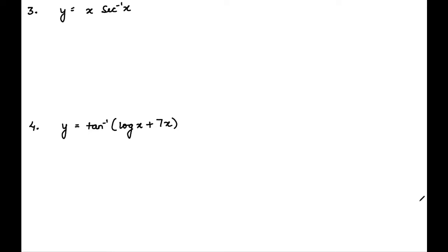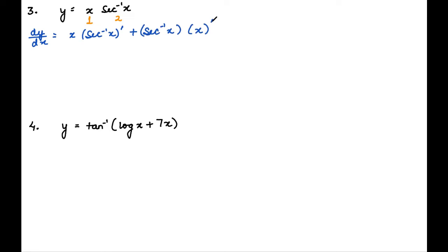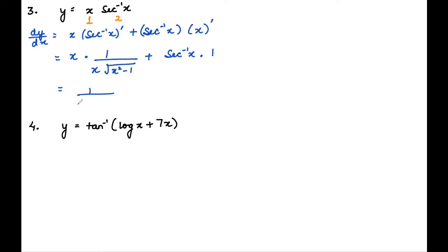Next question: y = x·sec⁻¹(x). We have two functions in a product, so we apply the product rule: first function as is times derivative of second, plus second function as is times derivative of first. This gives: x · (1/(x√(x²−1))) + sec⁻¹(x) · 1. Simplifying: 1/√(x²−1) + sec⁻¹(x). That is the answer.